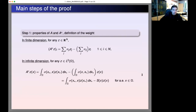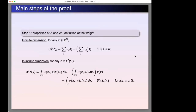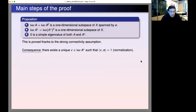Let me describe the main steps of the proof. The proof relies on the analysis of spectral properties of the operator A, in both finite and infinite dimensions, treated in parallel. On this slide I have written how to compute the adjoint of A: in the finite-dimensional setting it is given here, and in the infinite-dimensional setting here. The first key proposition, needed to define the weighted average, is the following: under the assumption of strong connectivity, the kernel of A and the kernel of A* are both one-dimensional subspaces.